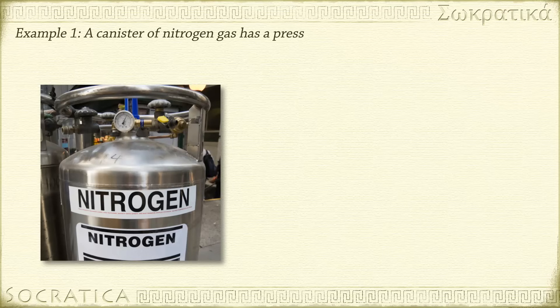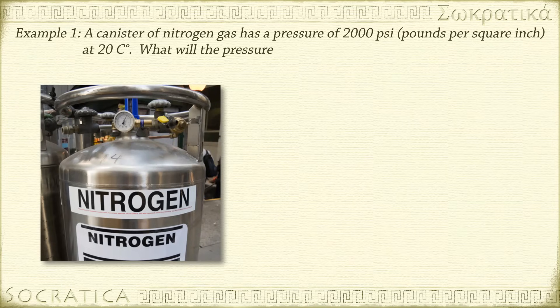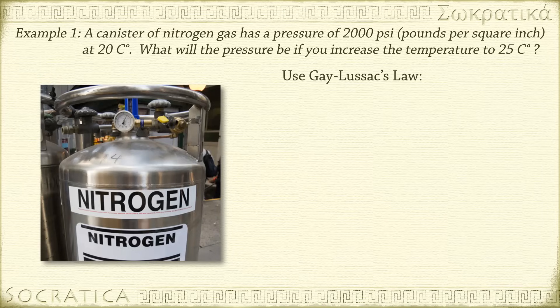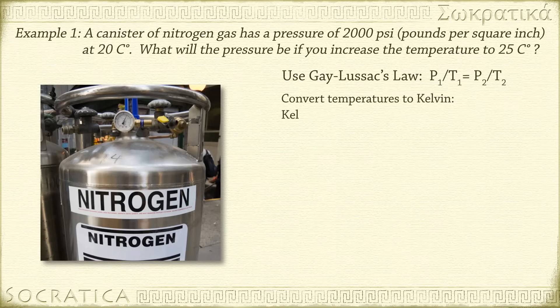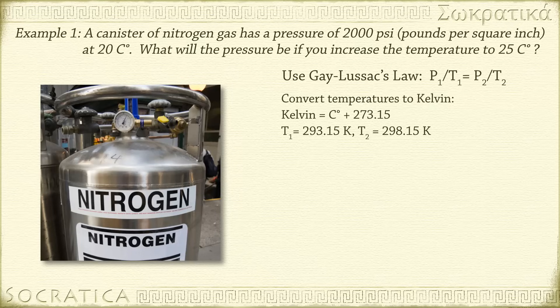A canister of nitrogen gas has a pressure of 2000 psi at 20 degrees Celsius. What will the pressure be if you increase the temperature to 25 degrees Celsius? Let's write down Gay-Lussac's law: P1 over T1 equals P2 over T2, because we have a before and after. Remember to convert the temperatures to Kelvin: Kelvin equals degrees Celsius plus 273.15. So T1 equals 293.15 Kelvin and T2 equals 298.15 Kelvin.